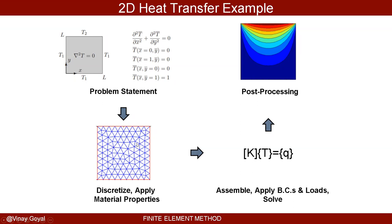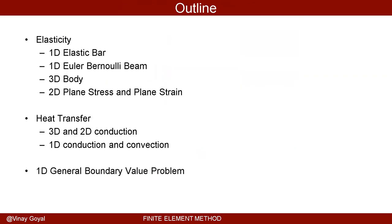By doing this, I can turn a partial differential equation into a system of algebraic equations: K·T = Q, where K is a stiffness matrix, T is the temperature vector, and Q is the heat flux or heat load applied. When you solve for temperature you can plot it beautifully. I'll cover the 1D elastic bar equation, the Euler-Bernoulli beam equation, then 3D, then 2D plane stress and plane strain, heat transfer problems, and finally a 1D general boundary value problem applicable to any field — including fluid mechanics and electromagnetics.